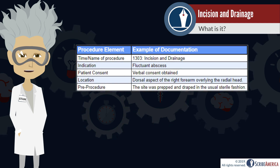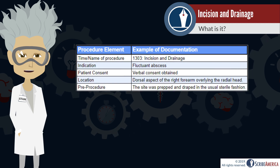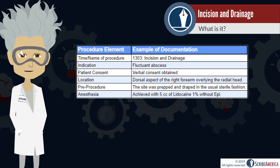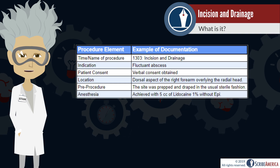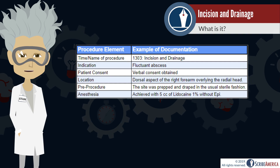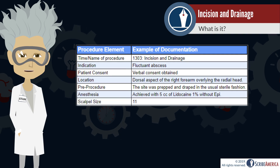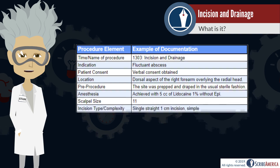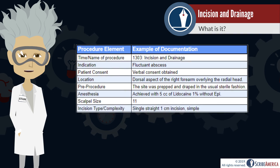Information regarding how the abscess was prepped and draped in sterile fashion should be included. The clinician will then numb the surrounding tissue. Document the percent and quantity of anesthetic used and whether it contained epinephrine. The type of scalpel used to make the incision should be documented as well.